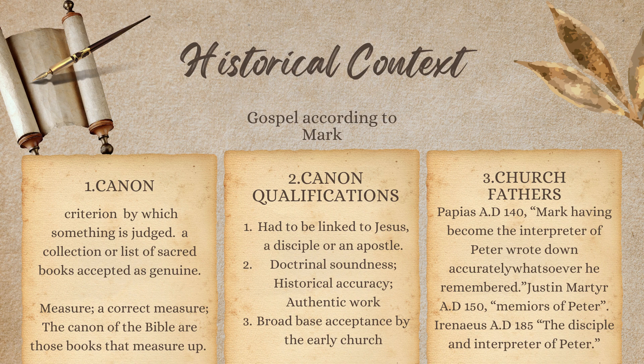We have to look at all these things and determine which one is actually the truth, which one measures up and should be taught in the churches. There are three qualifications for a letter to be in the canon. The first one: it had to be linked to Jesus, a disciple, or an apostle. The Book of Mark is linked to Peter. James and Jude are linked to Christ and other apostles because Christ was their brother. Paul was linked specifically to Christ through his vision and also to the other disciples.